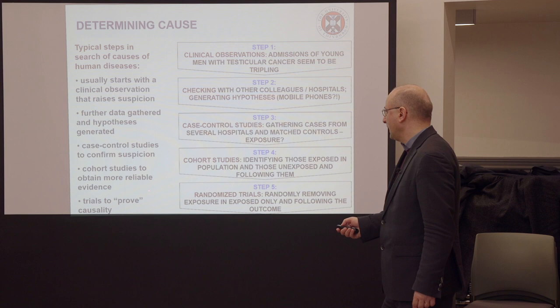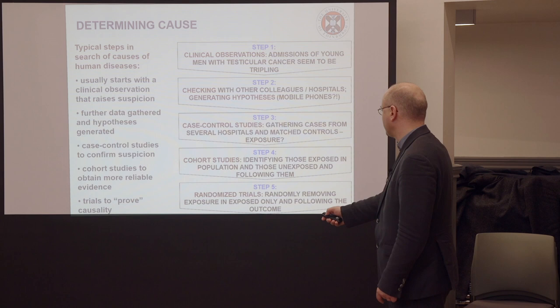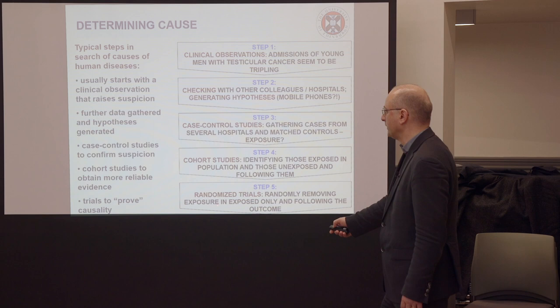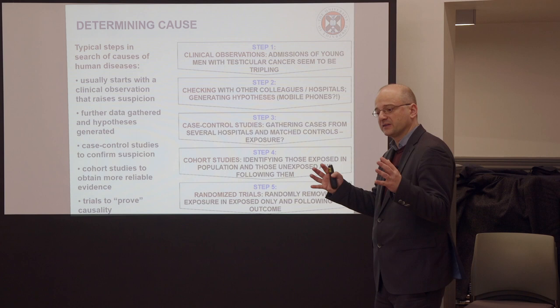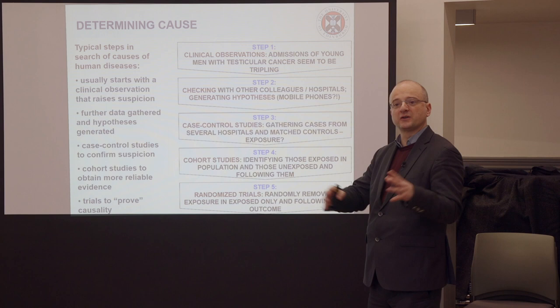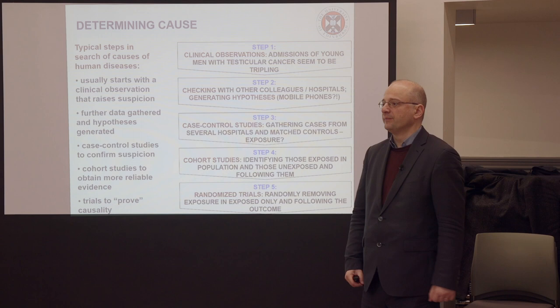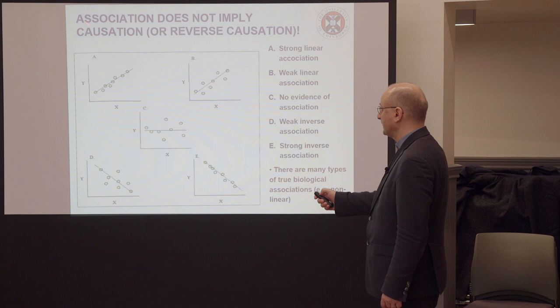Then you do cohort studies to obtain more reliable evidence — starting with those who carry mobile phones in their pockets versus those who don't, following them into the future and comparing cancer incidence. That is a much stronger design, especially if you can take only those who carry the phone, randomize them so half stop and half continue. Finally, a randomized trial would randomly remove exposure in the exposed group and follow the outcome — the strongest possible proof that the exposure was also the cause.